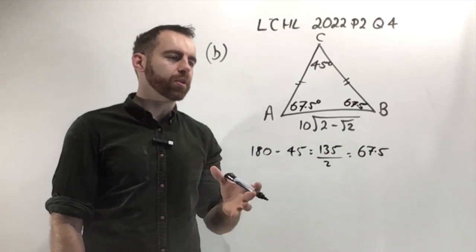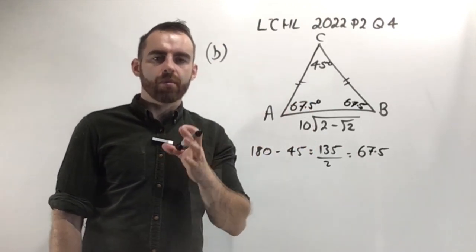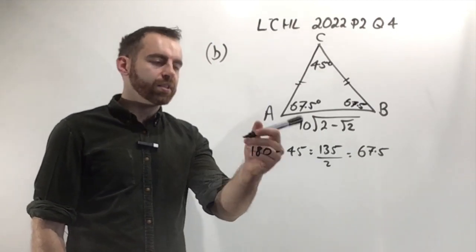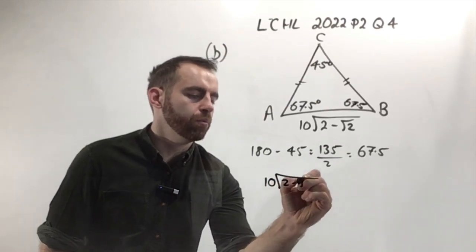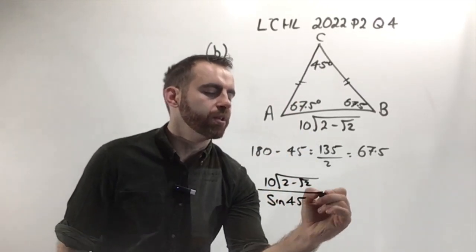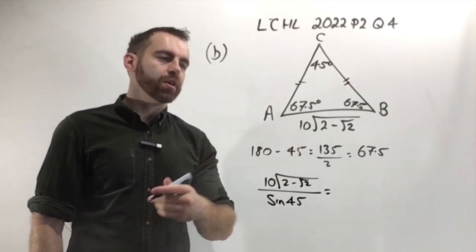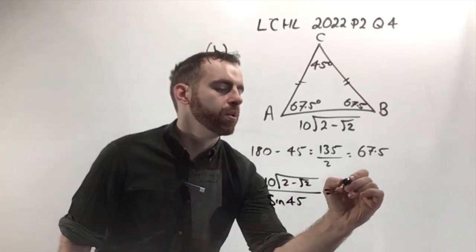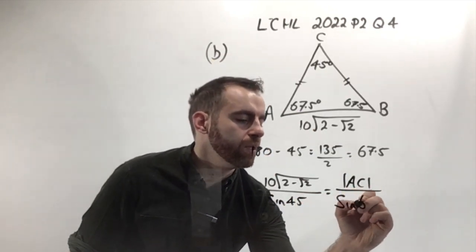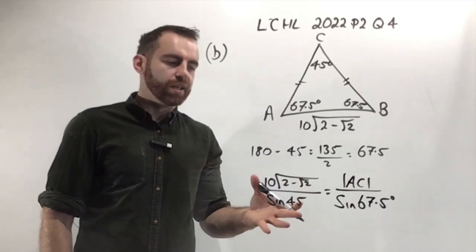Now we have enough information to use the sine rule. I'm using the sine rule because I have a non-right angle triangle, and I know the length of a side and its opposite angle. The sine rule tells me that any given side, in this case 10 over the square root of 2 minus root 2, divided by sine of the opposite angle—so sine 45. I know that equals any other side over sine of its opposite angle. The other side is AC, and the opposite angle is 67.5 degrees. So that's divided by sine of 67.5 degrees.